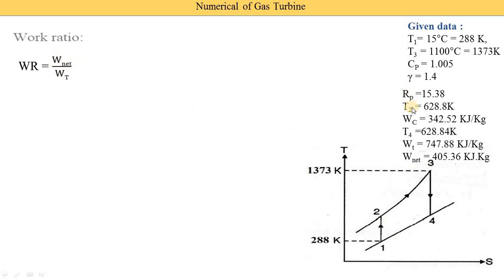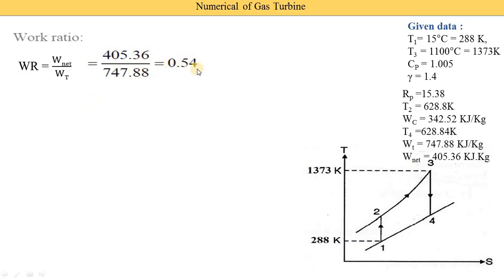The equation for work ratio is net work divided by turbine work. Net work is 405.36 kJ/kg and turbine work is 747.88 kJ/kg. Dividing these gives a work ratio of 0.54. This is dimensionless since both quantities have the same units, which cancel. Note: by mistake 'kJ × kg' was written but it should be 'kJ/kg'.